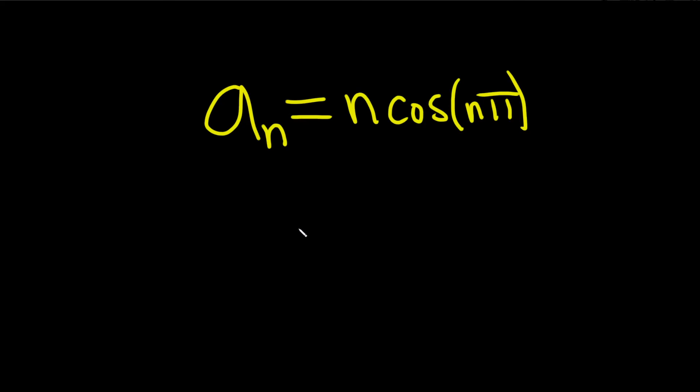Determine if the sequence converges or diverges, and if it converges, find the limit. So the first step is going to be to figure out what the cosine of n pi is. So let's go ahead and carefully go through that.